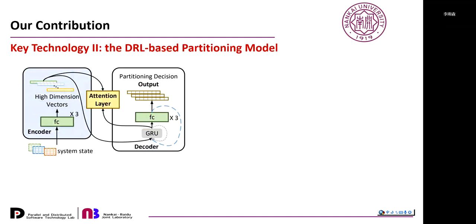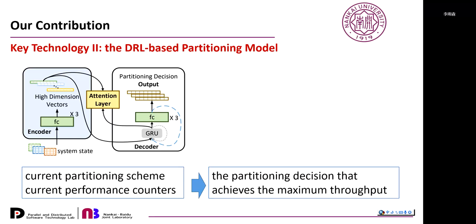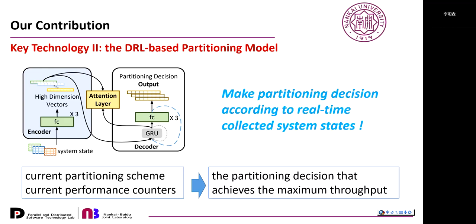The second key technology is the DRL model design for resource partitioning. This model takes the real-time system state as input, including the current partitioning scheme and performance counters, and directly outputs the partitioning decision. The model is composed of a deep neural network with attention and GRU technologies. The DRL model has two advantages: the inputs are easy to collect, and the well-trained model can make partitioning decisions very quickly.